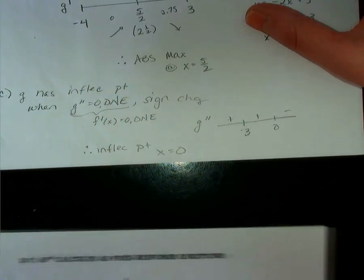To get my sign change, I'm looking at increasing and decreasing. And my function is increasing, increasing, decreasing. Therefore, I have a point of inflection at 0.